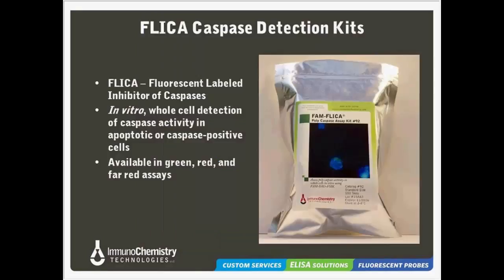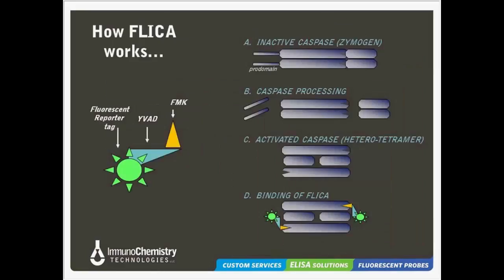If you are studying Alzheimer's disease in relation to caspase activity, how can you detect whether caspases are active in your cell culture? ICT's FLICA Kits, or Fluorescent Labeled Inhibitor of Caspases, offer an in vitro whole cell detection method to study caspase activity in apoptotic cells. These assays are available for a variety of different caspases, as well as polycaspase activity. The samples can be analyzed using a flow cytometer, fluorescent plate reader, or a fluorescence microscope, and are available in green, red, and far-red options.